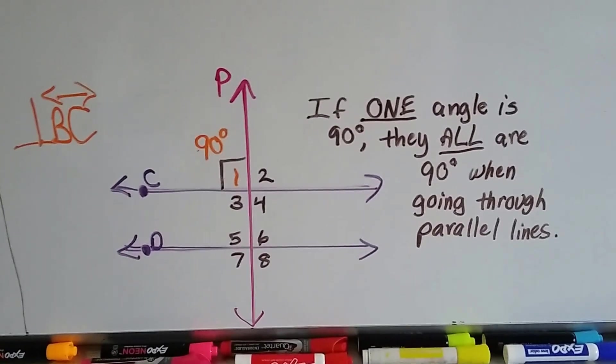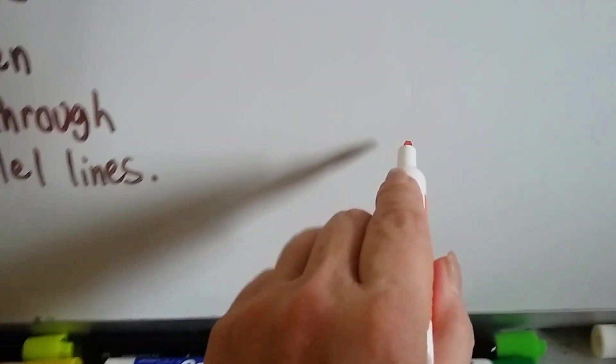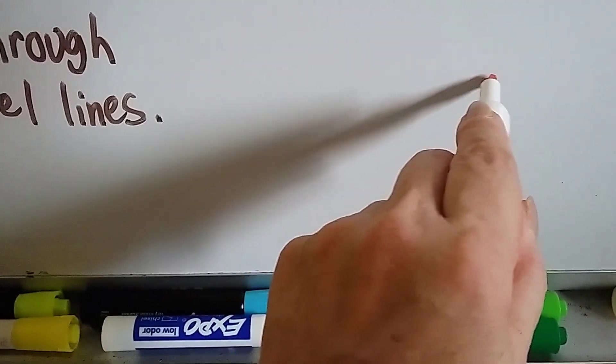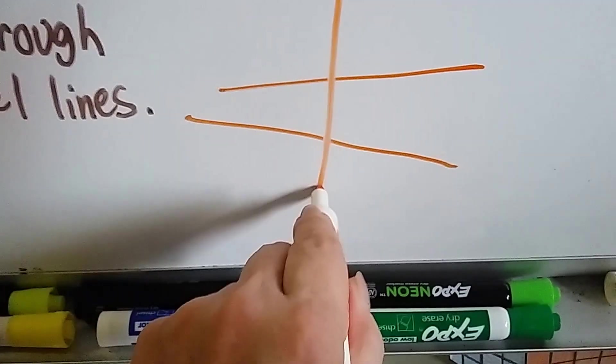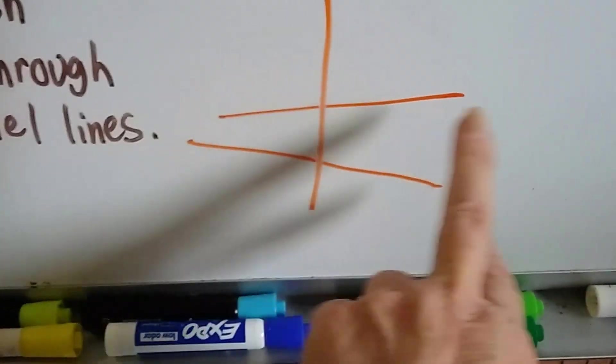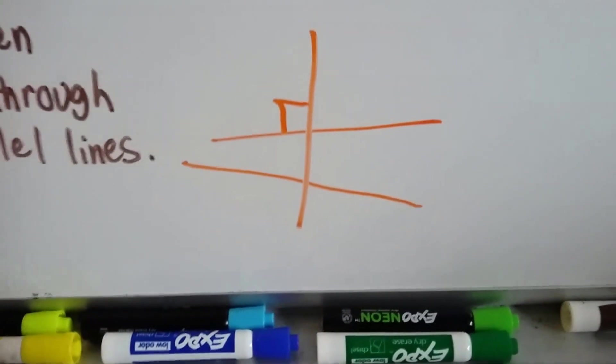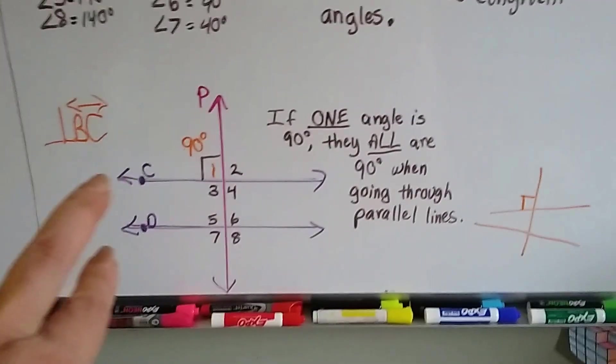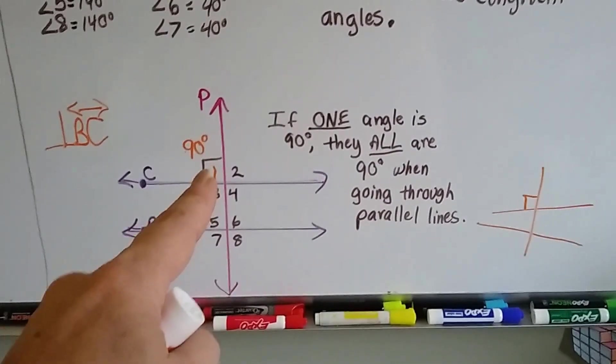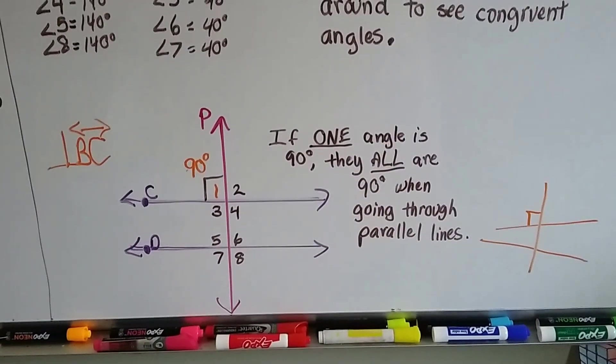If the lines aren't parallel, then you might have a transversal. This is just a little extra info. You might have a line going this way, another line going this way, and a transversal. These two are not parallel, are they? But what if this one is perpendicular here? So that's going to be in the future. We'll talk about that. But for right now, we're talking about parallel lines. And if the parallel lines have a transversal, and it's hitting one angle at 90 degrees, you know they're all 90 degrees.